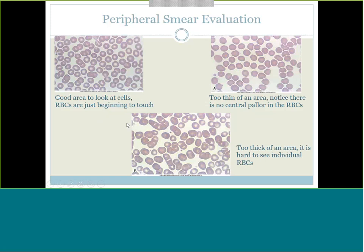You'll know you're in a good spot when you can see red cells individually - they're close to each other but not clumpy looking, and nothing looks squished. Looking at this picture, the upper left is a great area - you can see all those cells individually. The very bottom is too clumped and too thick - you can't see the cells individually. The top right shows cells that are very distorted with no white central color area - that means you're too thin, almost at the very end of the smear. Ideally it should look like the top left area.